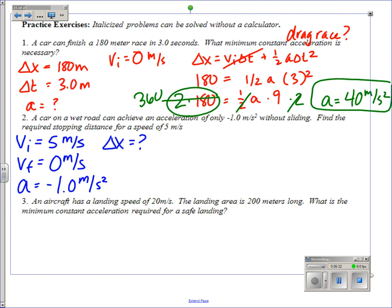Once you've identified your variables, go back to your kinematic equations and choose the one that has the same four variables. And then it's just a matter of solving.